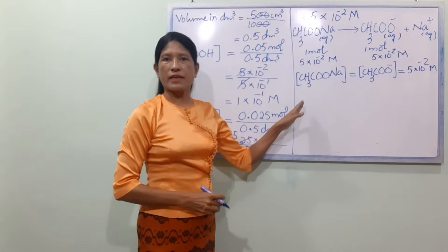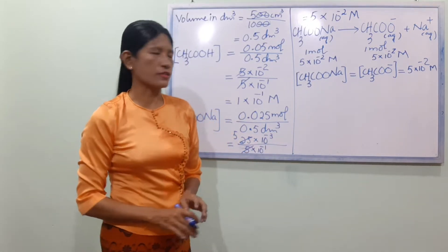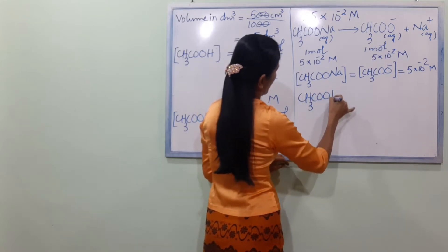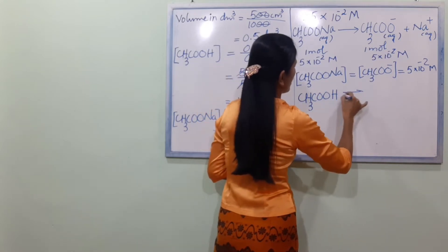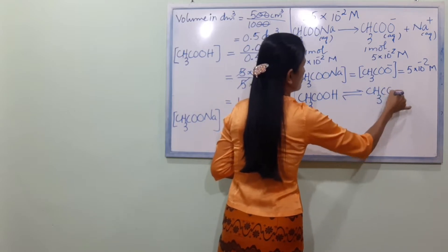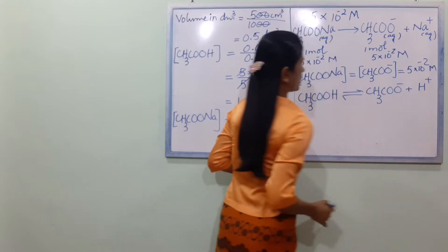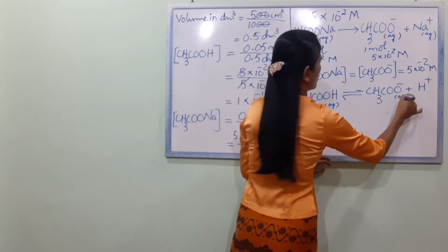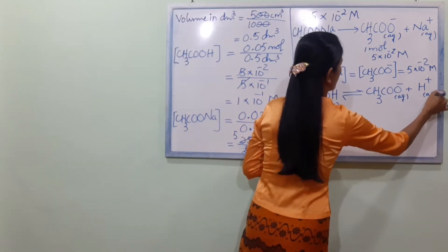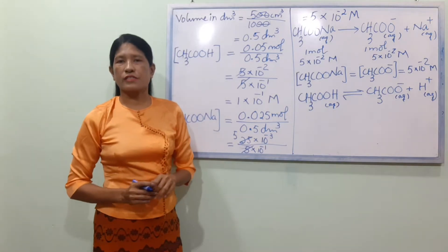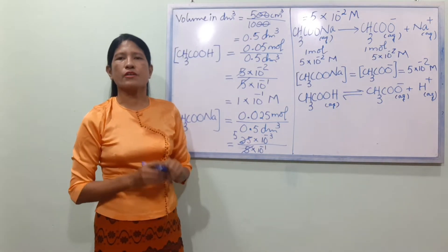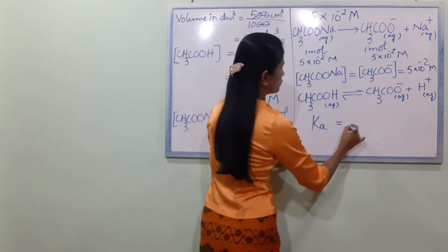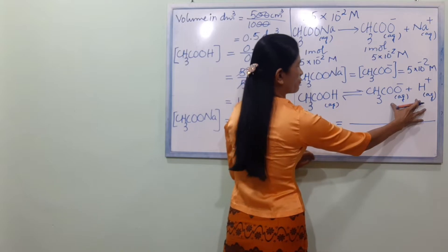Now we write the equilibrium equation: CH₃COOH reversible reaction gives CH₃COO⁻ plus H⁺. The equilibrium constant Ka expression is Ka equals concentration of CH₃COO⁻ times concentration of H⁺ divided by concentration of CH₃COOH.